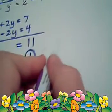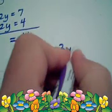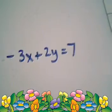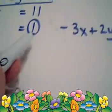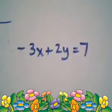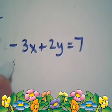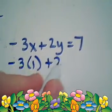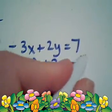Which is actually going to be -3x plus 2y equals 7. There we go. And I'm going to replace x with 1. We just found that x was 1, so we have -3 times 1 plus 2y equals 7. Negative 3 plus 2y is 7.